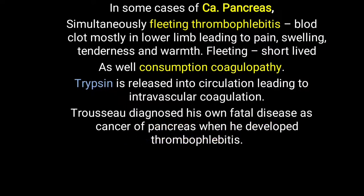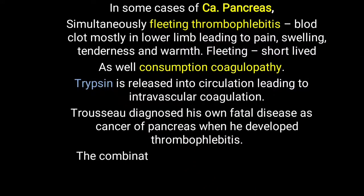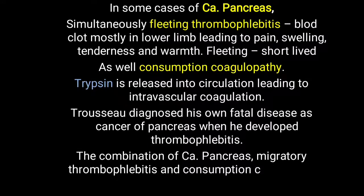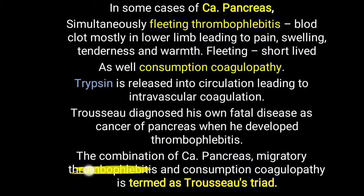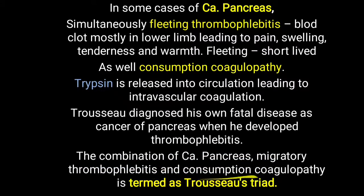Thrombophlebitis is also seen in some cases of CA lungs. The thrombophlebitis in this triad is called migratory thrombophlebitis because it moves from one limb to another. The combination of CA pancreas, migratory thrombophlebitis, and consumption coagulopathy together is called Trousseau's Triad.